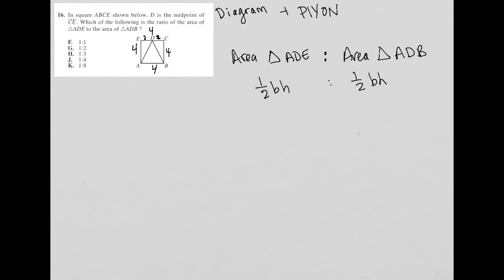Integers, not decimals. So now I know that each of my side lengths for the square is 4. I just made it up. And then ED and DC are 2 because we were told that D is a midpoint.